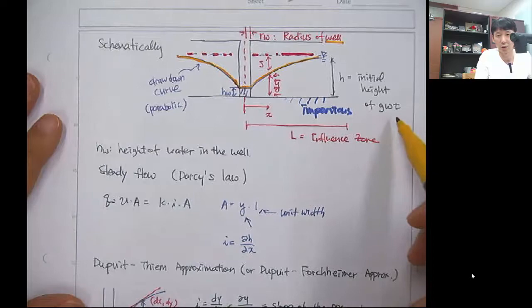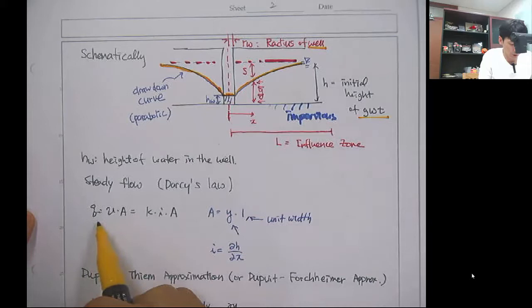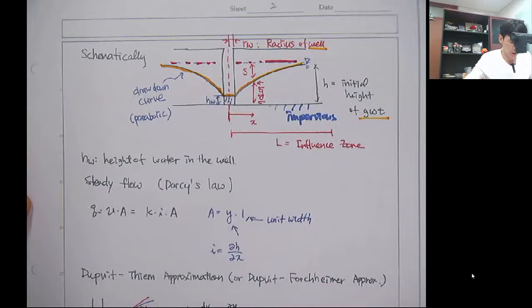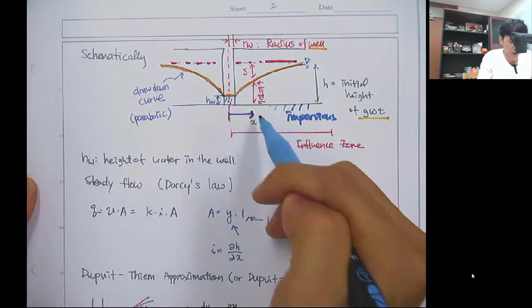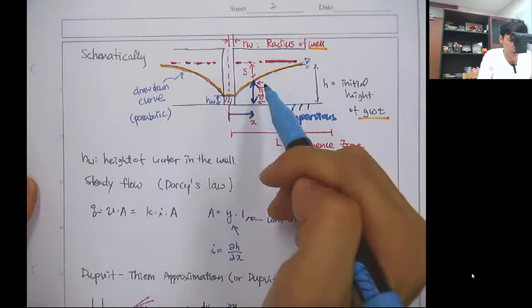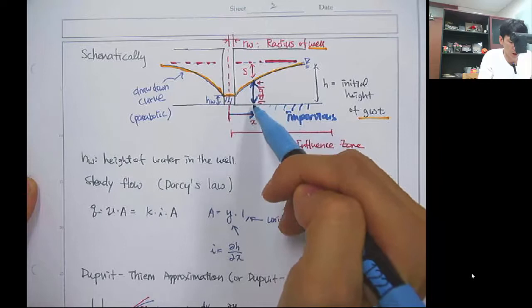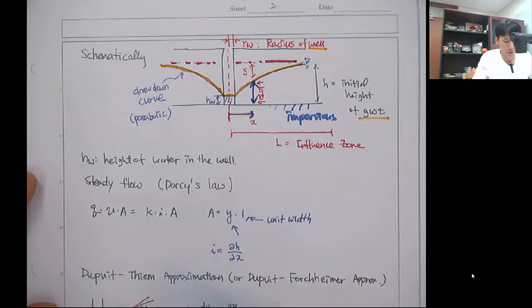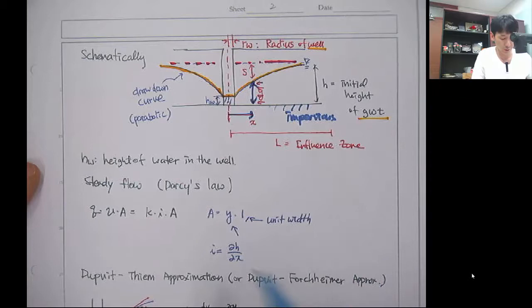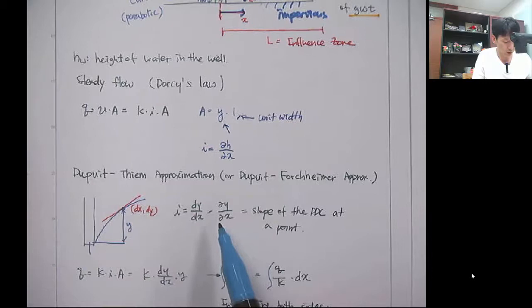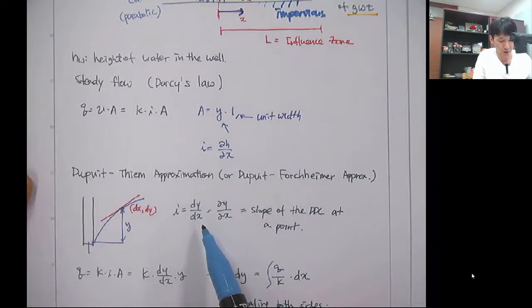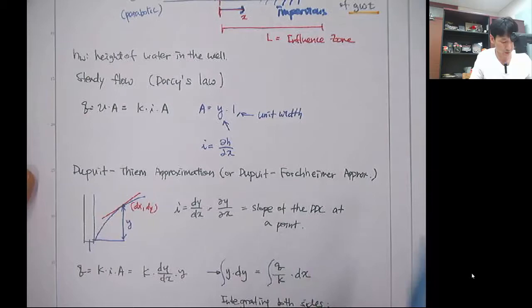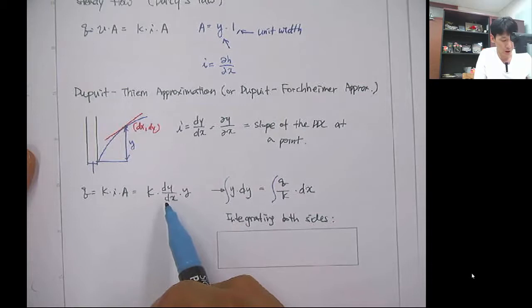From Darcy's law, q equals k times i times A. At distance x, y is the height of the pre-discharge surface, so the area per unit width is y times 1. The hydraulic gradient i is dh/dx, and using the Dupuit-Forchheimer approximation, i equals dy/dx — the same as the slope of the drawdown curve at that point. So q can be expressed as k times (dy/dx) times y.